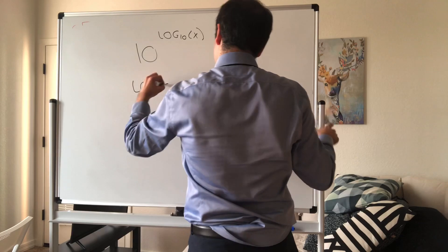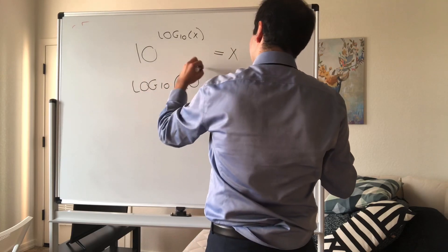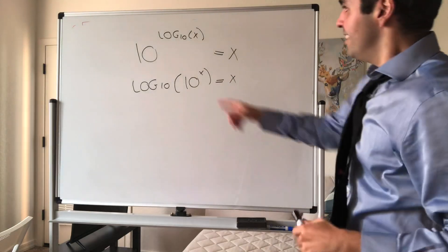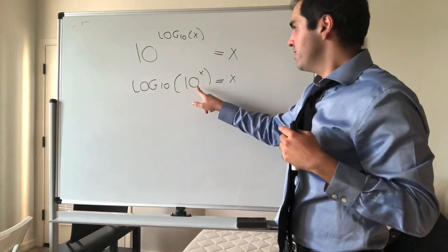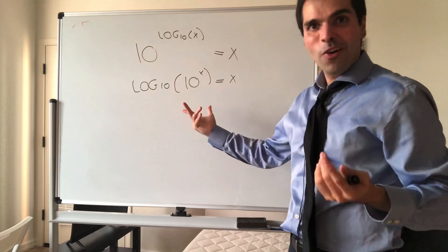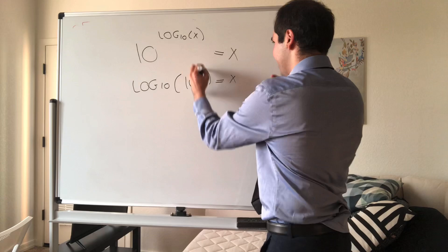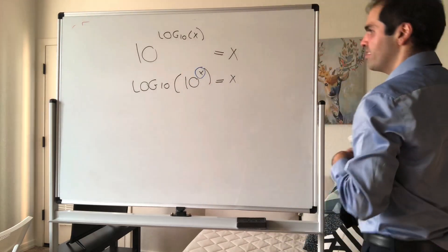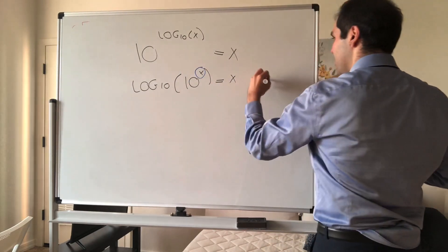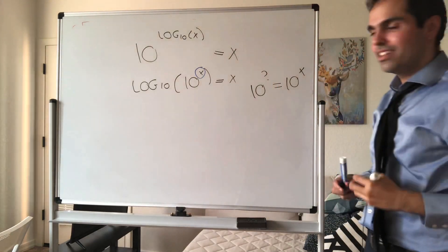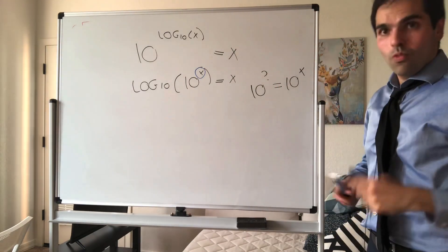And also, log base 10 of 10 to the x is also x. This makes sense because the question is, which power do you have to raise 10 to to get 10 to the x? Well, x. Or in other words, 10 to the what is 10 to the x? The answer is x.